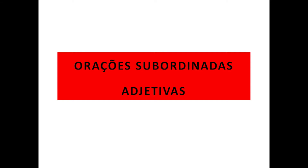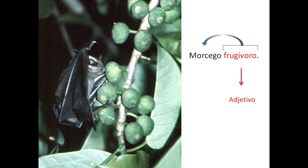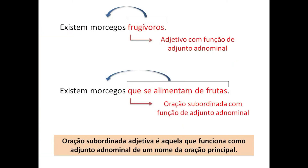O que é oração adjetiva? Ela nos traz de volta às orações. Olha só: o morcego é frugívero. Esse 'frugívero' é um adjetivo — ele vai estar adjetivando, dando uma característica ao substantivo 'morcego'. Então o adjetivo vai me dar uma explicação sobre um substantivo. Existem morcegos frugíveros: o adjetivo com função de adjunto adnominal está especificando uma característica de morcegos.